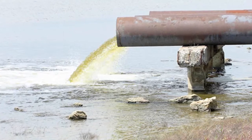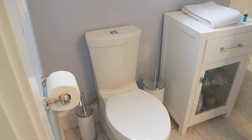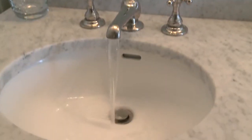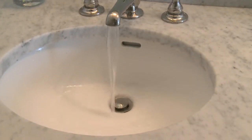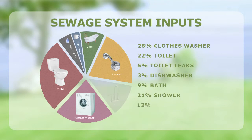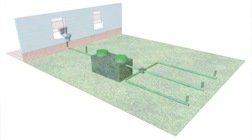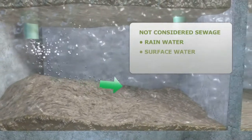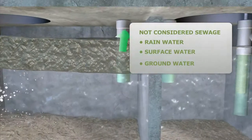So what is sewage anyway? Sewage is all the wastewater that comes from your house — your toilet, your dishwasher and washing machine, sink and shower drains, and all the solids and waste that come with it. Up to 50% of domestic sewage is created by your clothes washer and toilet. Your dishwasher produces 3%, while your bath, shower, and sink faucets produce the remaining percentage. All this wastewater exits your house and enters your septic system. By the way, rainwater, surface water, and groundwater are not considered sewage.